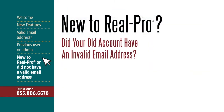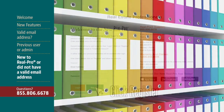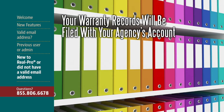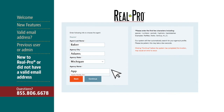If you're new to RealPro or did not have a valid email address on your old account, please click Register. This next step will add your warranty records to your current agency's account. Enter your last name, the city your agency is located in, the state your agency is located in, and the first few letters of the real estate agency you work for. The full agency name should appear as a drop-down item. When it does, select it from the drop-down and click Continue.